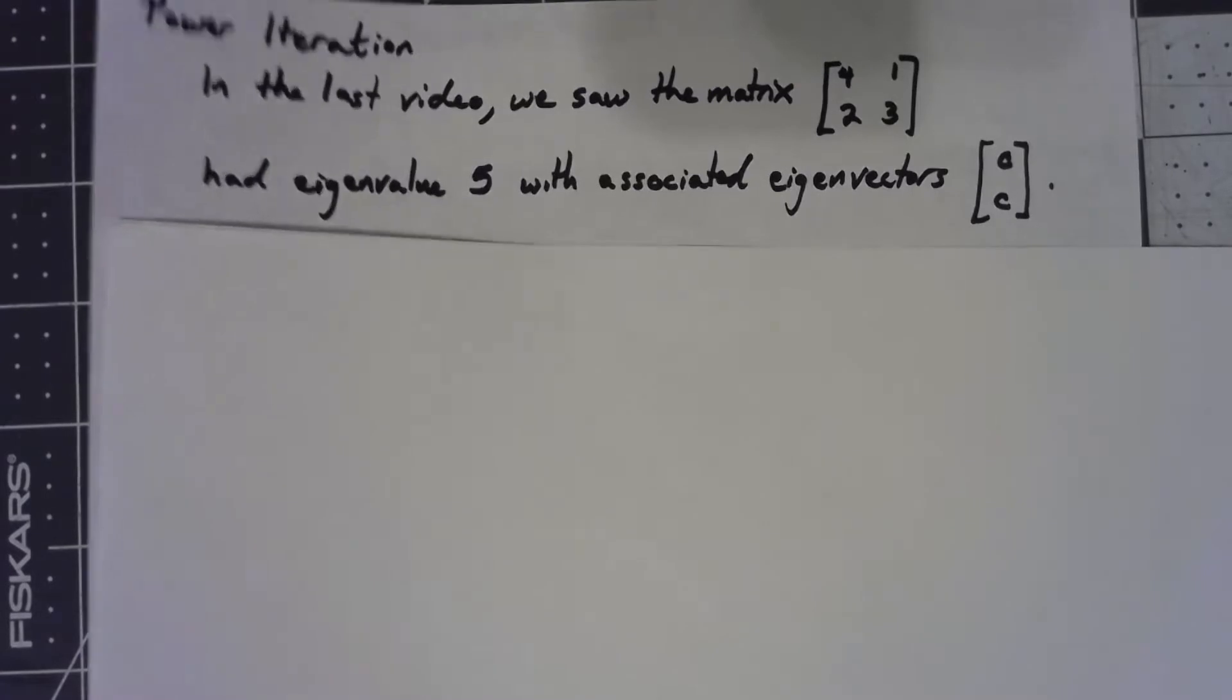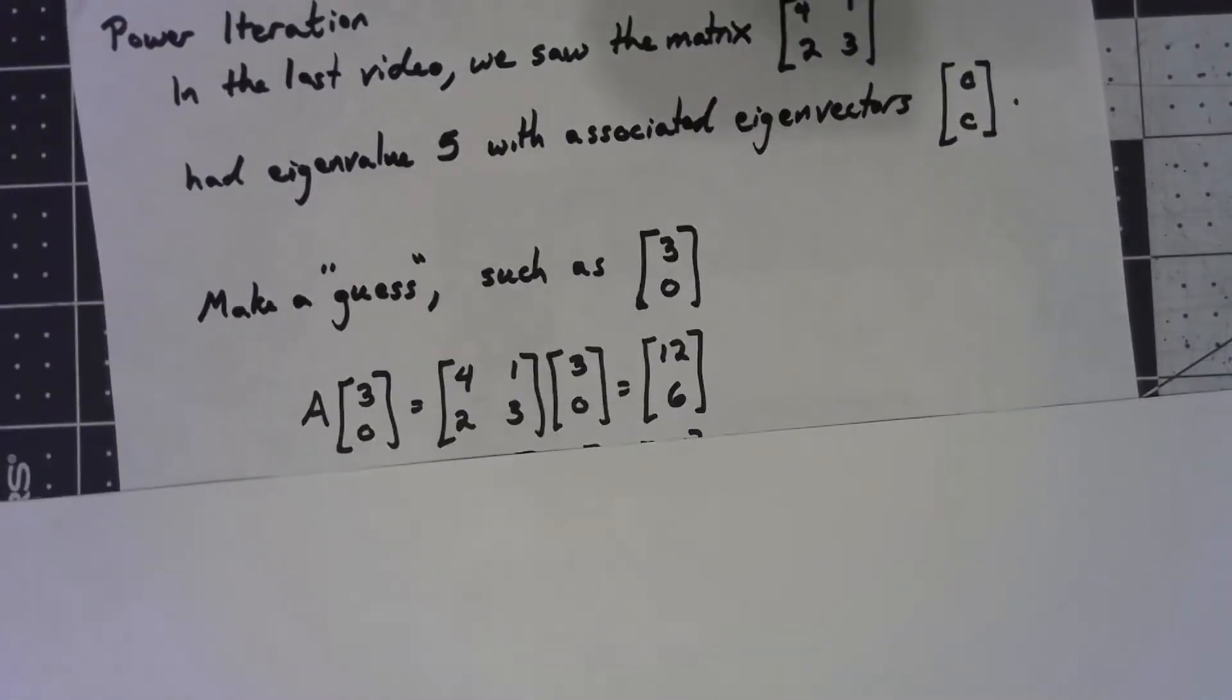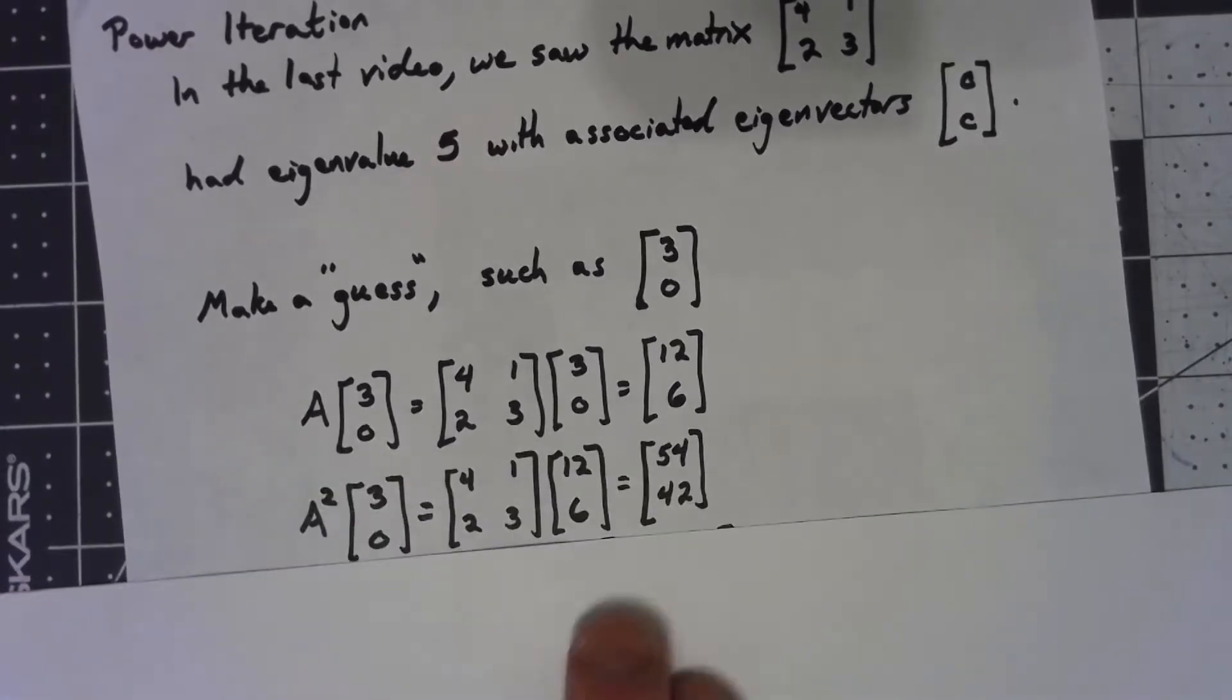What I'm going to do is just take powers of my matrix times some initial guess. So I'm just going to make a guess of [3, 0], and I take my matrix times it, and I get [12, 6]. Take the matrix times [12, 6], so I'm doing A squared times [3, 0], and I get [54, 42].